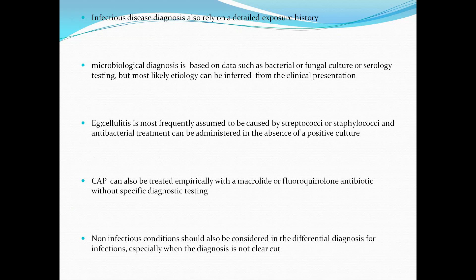Infectious disease diagnosis also relies on a detailed exposure history. The microbiological diagnosis is based on data like bacterial culture, fungal culture, serology, and most likely etiology can be inferred from clinical presentation. For example, in conditions like cellulitis, the most frequent organism is associated with streptococcus or staphylococcus, and antibacterial treatment can be administered in the absence of a positive culture. Community-associated pneumonia can also be treated empirically with a macrolide or a fluoroquinolone without specific diagnostic testing. Non-infectious conditions should also be considered in the differential diagnosis.